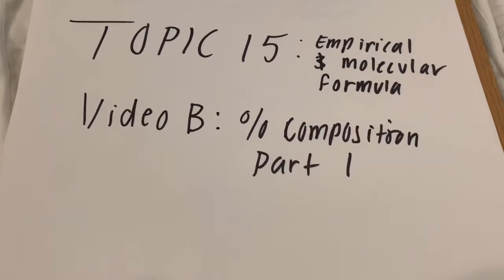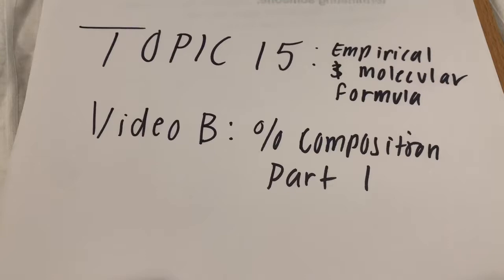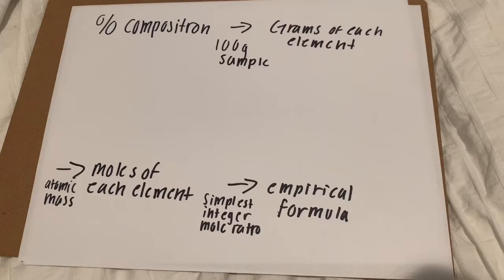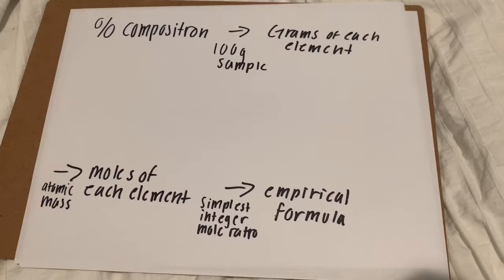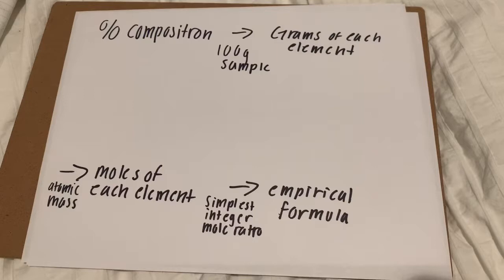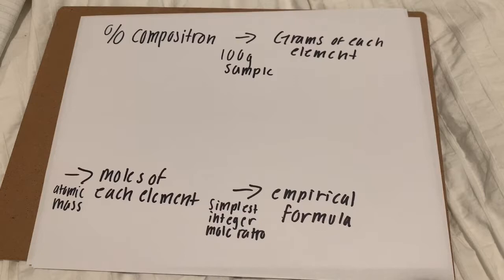Good morning students. The problem we will be solving today is from topic 15 video B, percent composition part 1. It's helpful to remember that we are given a percent composition that we convert to grams of the element, assuming a 100 gram sample. Afterwards, we convert the grams of each element to moles by dividing by the atomic mass. Finally, we find the empirical formula by finding the simplest integer mole ratio.